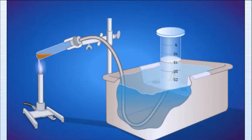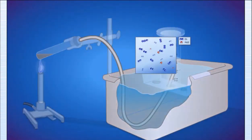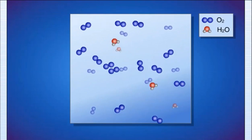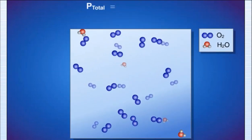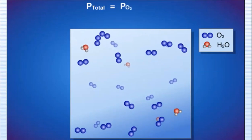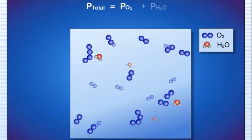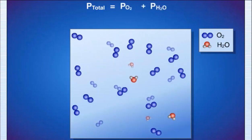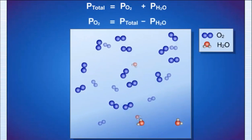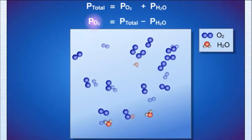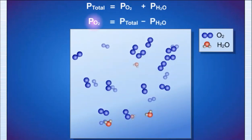The oxygen gas collected in this manner is not pure because water vapor is also present in the cylinder. The total gas pressure is equal to the sum of the pressures exerted by the oxygen gas and the water vapor. Consequently, we must allow for the pressure of water vapor when we calculate the amount of O2 generated. The partial pressure of O2 equals the total pressure minus the pressure due to water vapor.